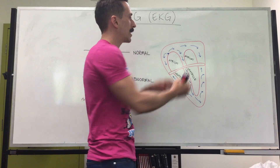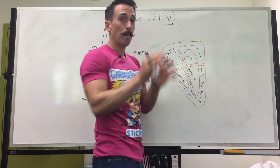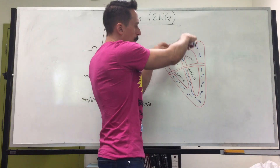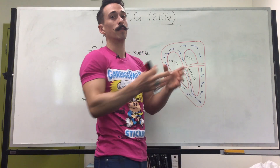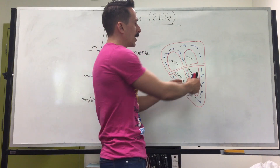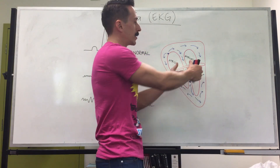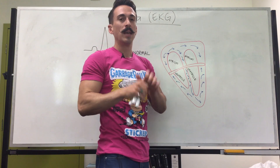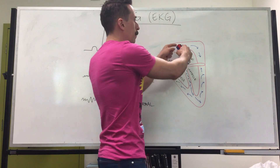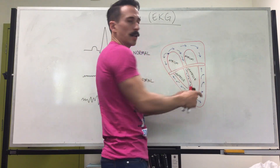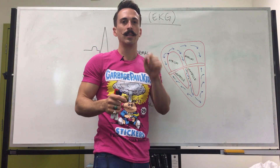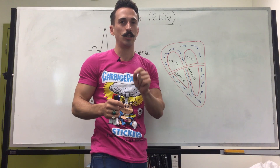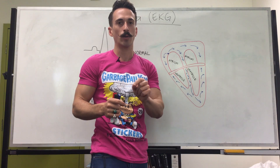What happens is that the atria fill with blood, then the muscles surrounding the atria contract and push the blood down into the ventricles. The muscles surrounding the ventricles then contract and push the blood out of the heart. Now in order for the muscles of the heart to contract, they need to be sent electrical signals, and that's what the ECG readouts look at.